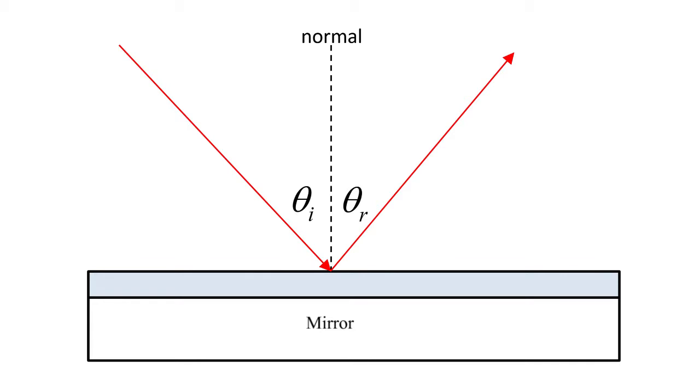Angles are typically measured with respect to the normal, an imaginary line that is perpendicular to the boundary between surfaces. The law of reflection states that the angle of incidence, theta sub i, is equal to the angle of reflection, theta sub r.